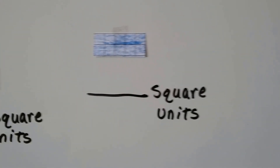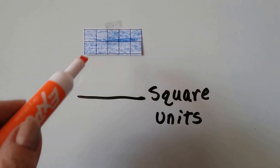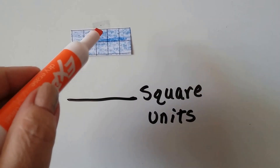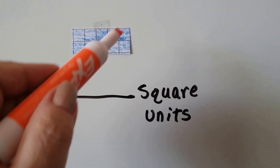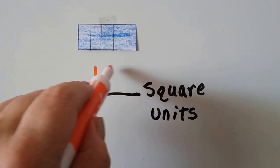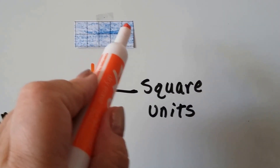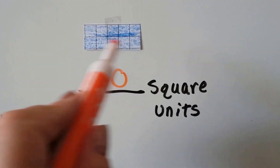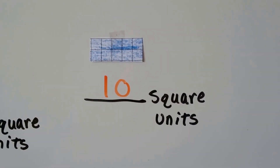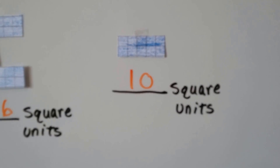How about this one? How many square units are here? Let's count them: 1, 2, 3, 4, 5, 6, 7, 8, 9, 10. I could have counted them going across too. So that one's 10 square units.